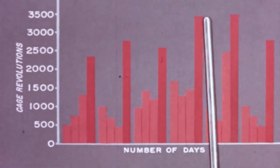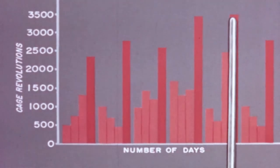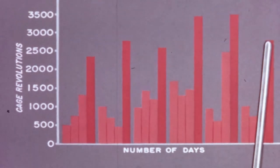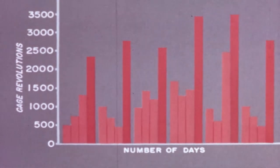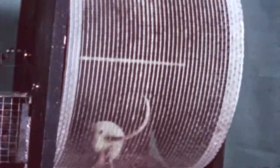It has been established that this great increase in running activity coincides with the period of heat. However, since the female rat may begin running several hours before she will mate, this method is only of relative value in determining either the onset of heat or the time of ovulation.